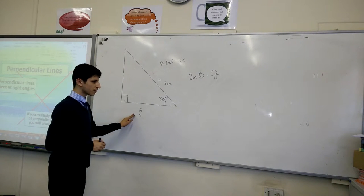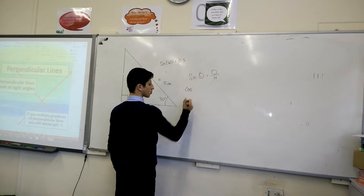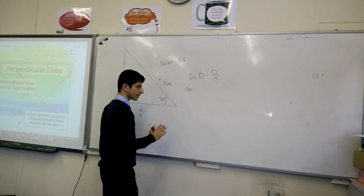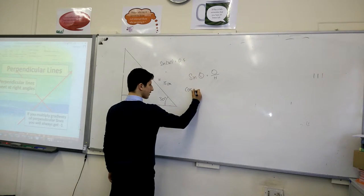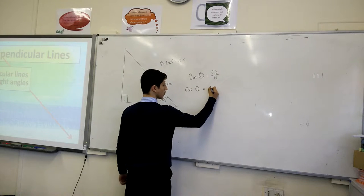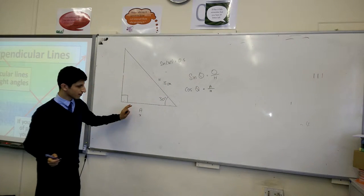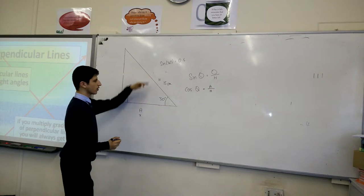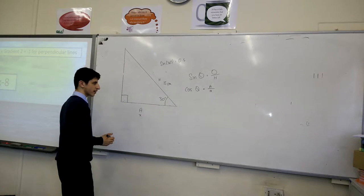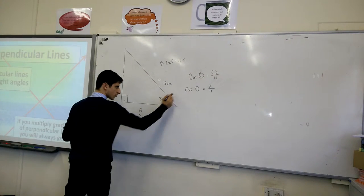Now, because this is adjacent, you use something else. You use something called the cosine. Cosine of theta, if this is theta, is equal to the adjacent over the hypotenuse. The adjacent is this side here, this is underneath the angle, and the hypotenuse is another side of the triangle.